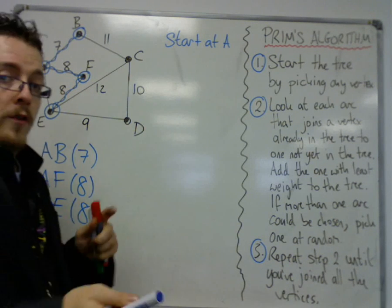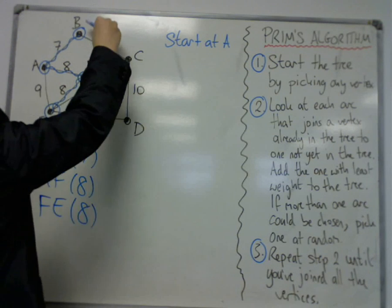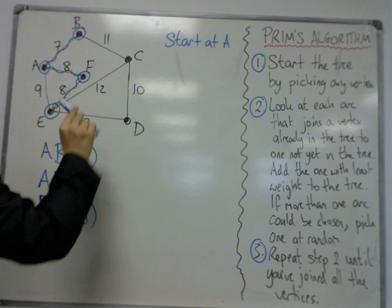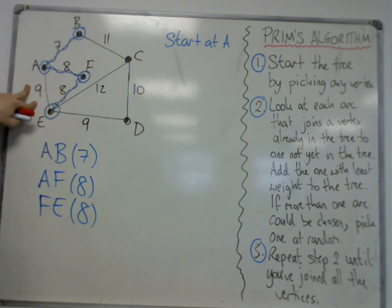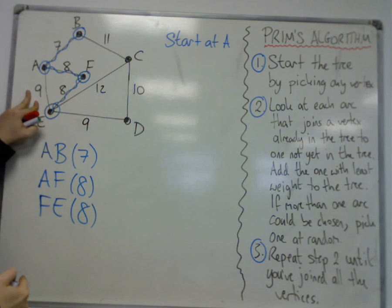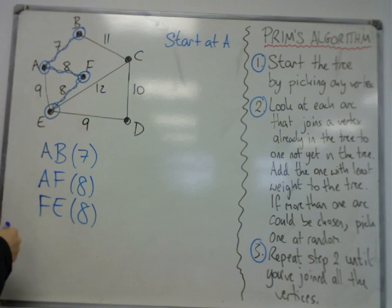Right, I'm then looking at all of the edges coming out of these four vertices. So B, C, A, E, E, C, and E, D. Well, I can't pick A, E because that will create a cycle. So then I must be looking at E, D.